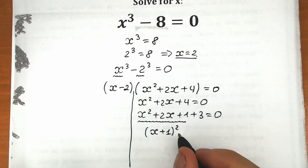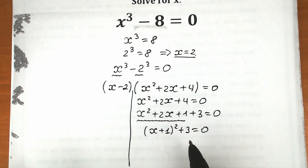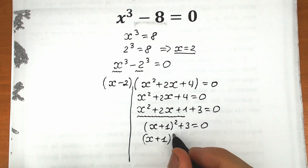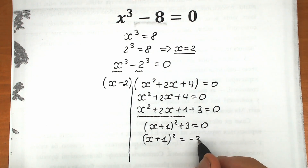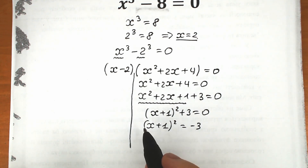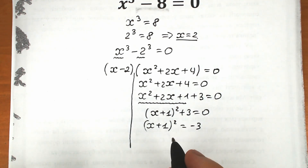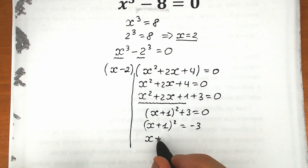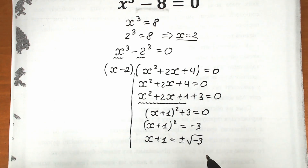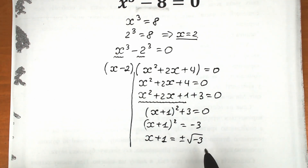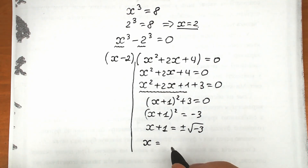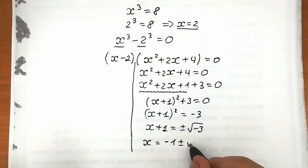Let's bring this 3 to the right side. So we have x plus 1 squared plus 3 equal to 0, which gives us x plus 1 squared equal to minus 3. Now let's take square roots on both sides. We cancel the square on the left, so x plus 1 equals plus or minus square root of minus 3. Bringing the 1 to the right side, x equals minus 1 plus or minus square root of minus 3.